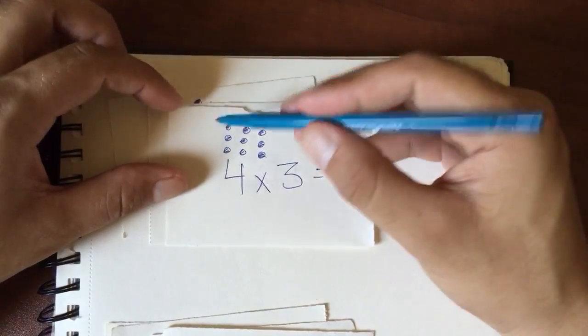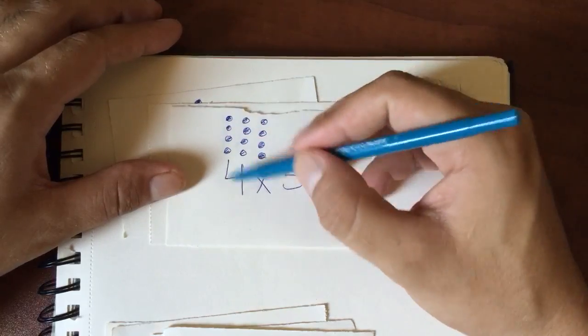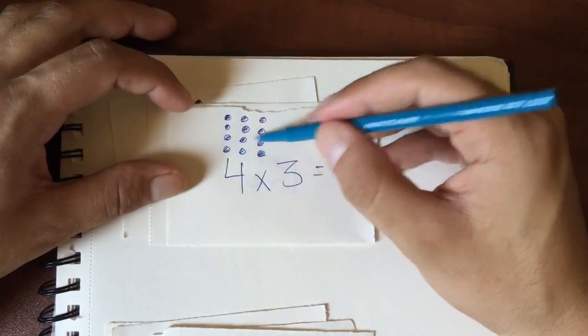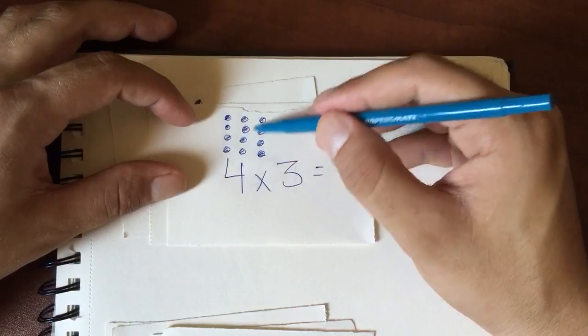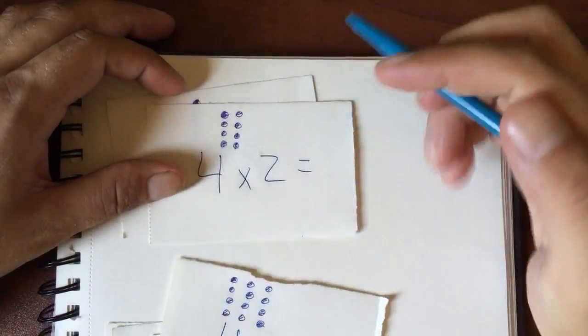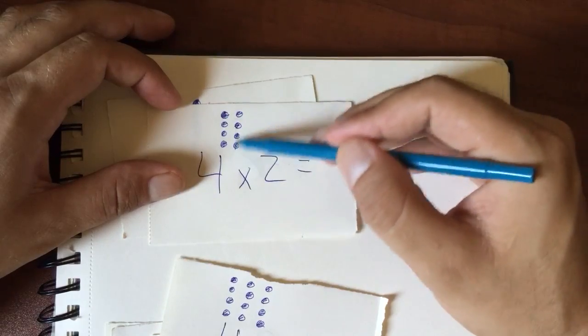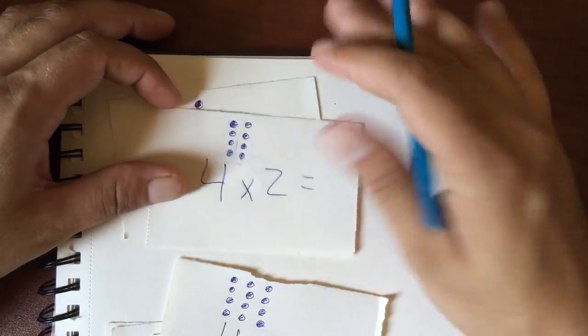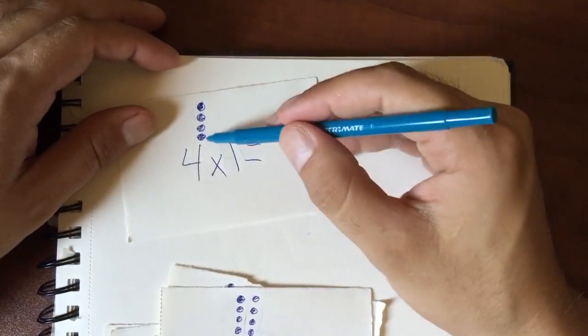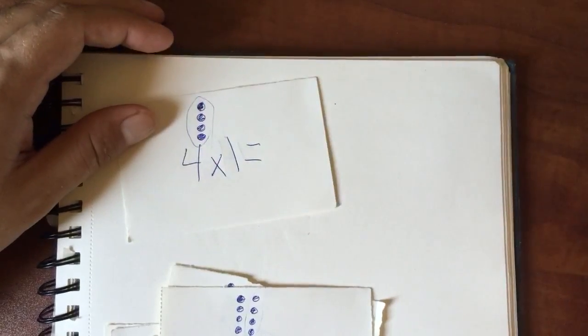So in 4 times 3, what it means is you have 1, 2, 3, 4—you have 4, and you're multiplying it by 3, so you have 4 three times. And 4 times 2, you have 1, 2, 3, 4 two times, so you have 2 lines. And 4 times 1, you have 1 line.